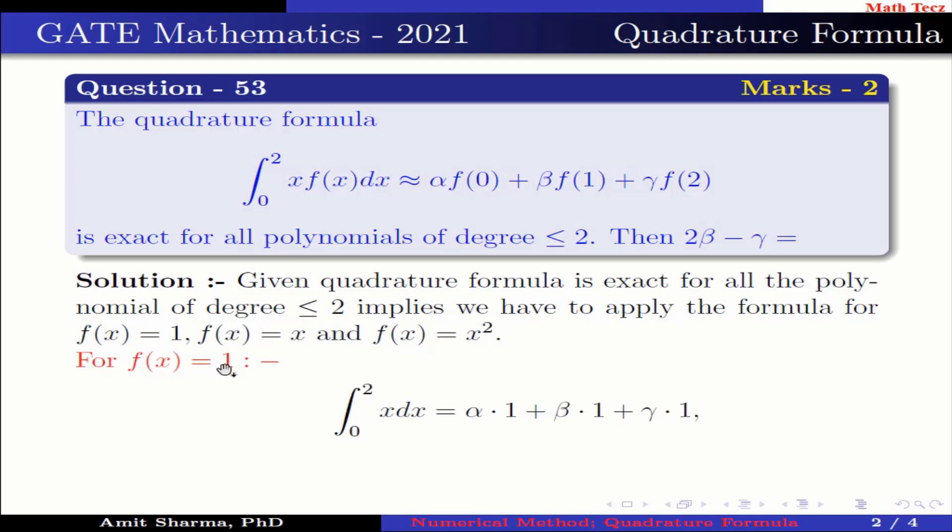For f(x) = 1, we have integration from 0 to 2, x dx equals α times 1 plus β times 1 plus γ times 1, because f(0) is 1, f(1) is 1, and f(2) is 1. The integration of x is x² by 2. Substituting the upper and lower limits, we have